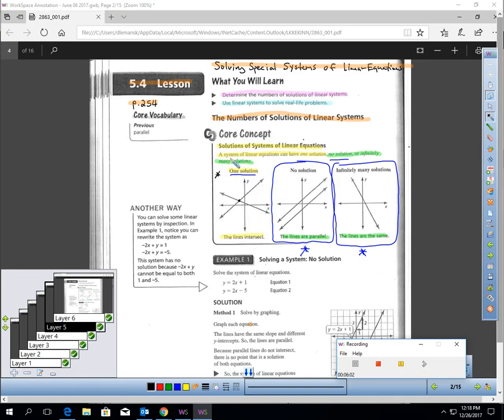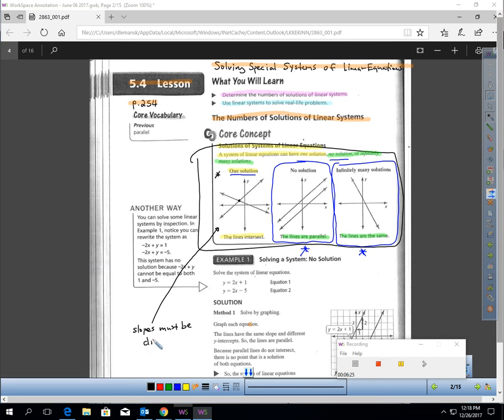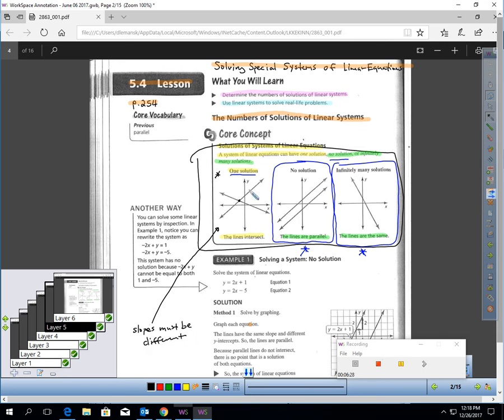I wanted to go back to this picture before I continue because this is super important when you think about graphing. I want you to notice something. When you have one solution, we have two lines meeting. Does it make sense that the slopes must be different to have one solution? Look at that for a minute. The lines have to have a different angle. The slopes must be different to get one solution. However, if the slopes are the same, same slopes is when you either get no solution or infinitely many.